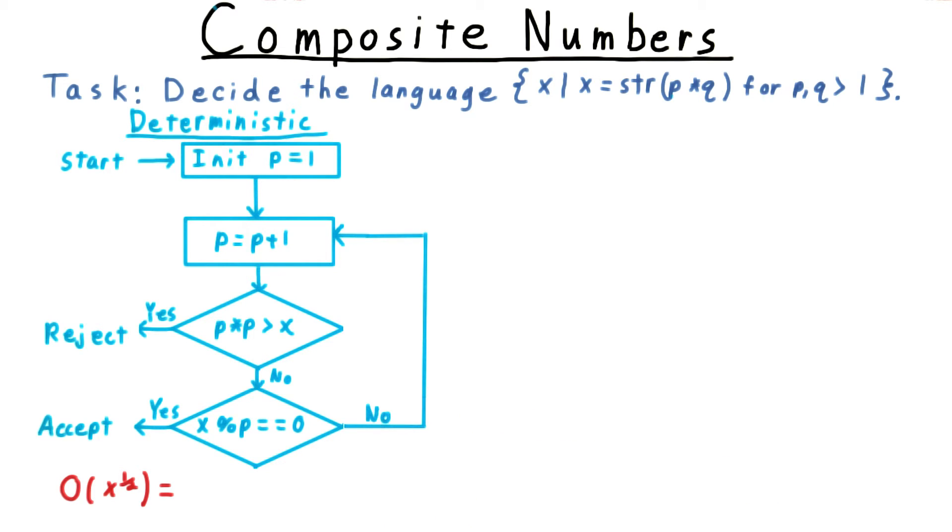The trouble is that we might end up needing square root of x iterations of this outer loop here in order to find the right p, or to confirm that one doesn't exist. This is what makes the deterministic algorithm slow. Since the value of x is exponential in its input size, remember that it's represented in binary. This deterministic algorithm is exponential.